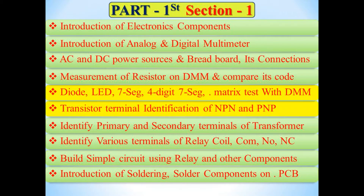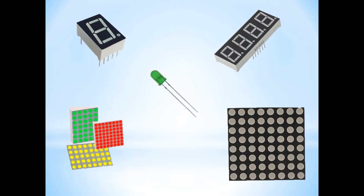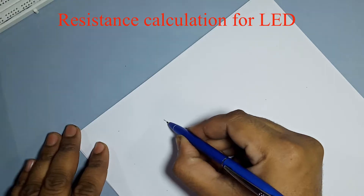In the first part, Section 1, we will see the following practicals: LED 7-segment display, 4-digit 7-segment display, dot matrix display, and test with digital multimeter.